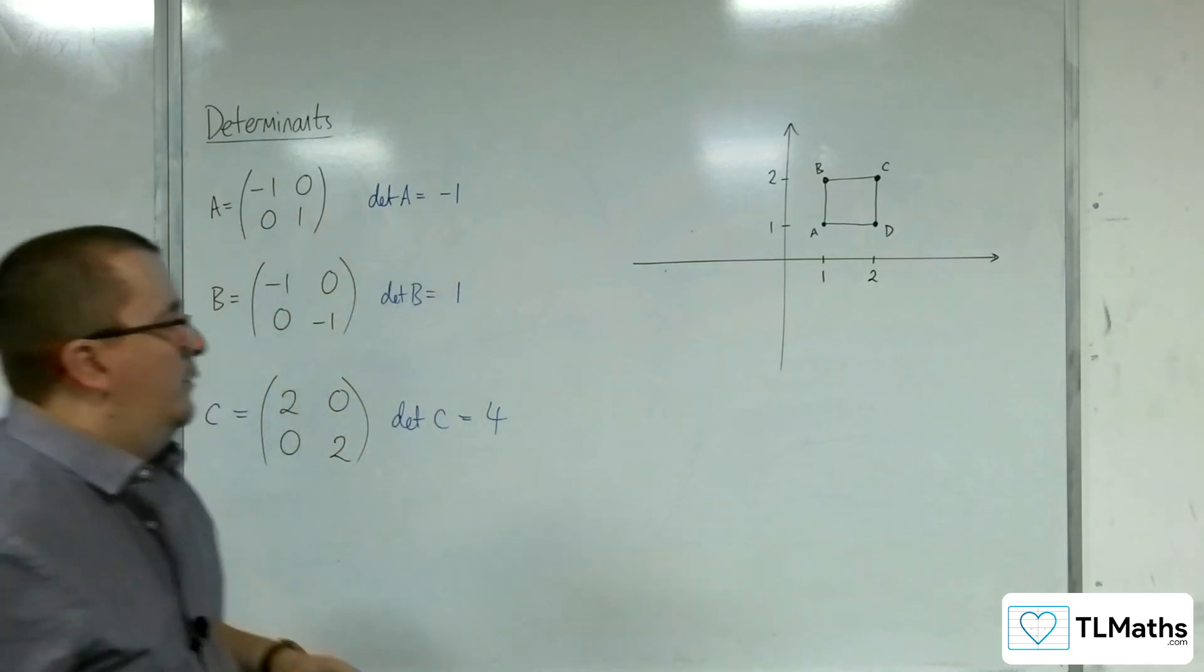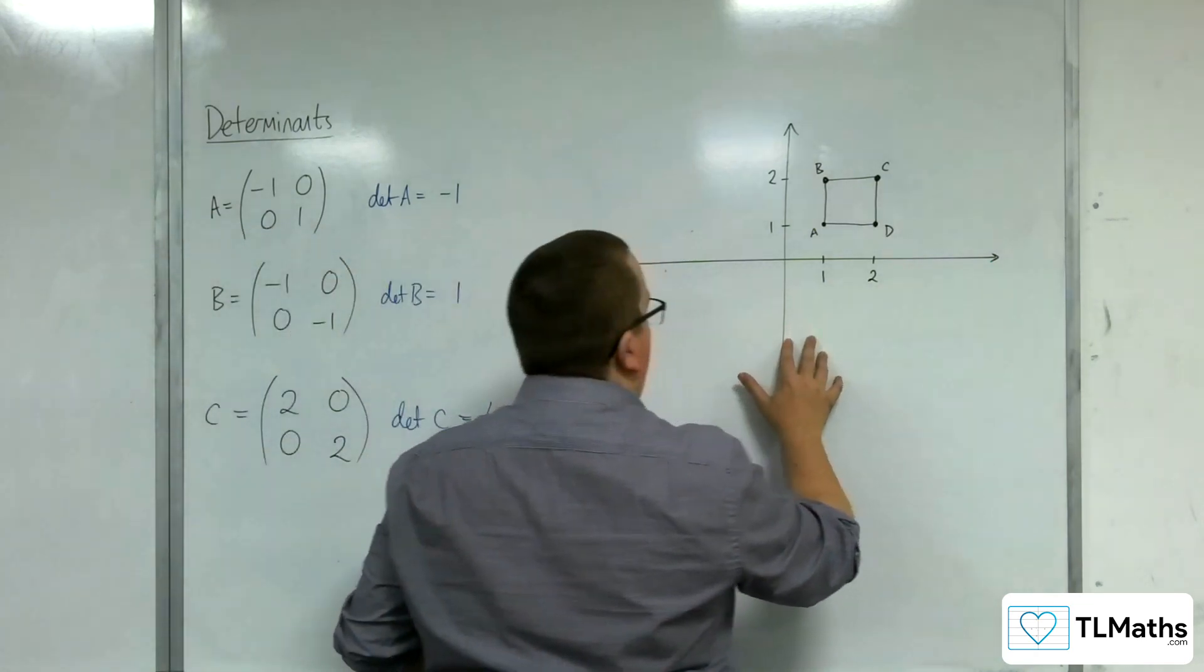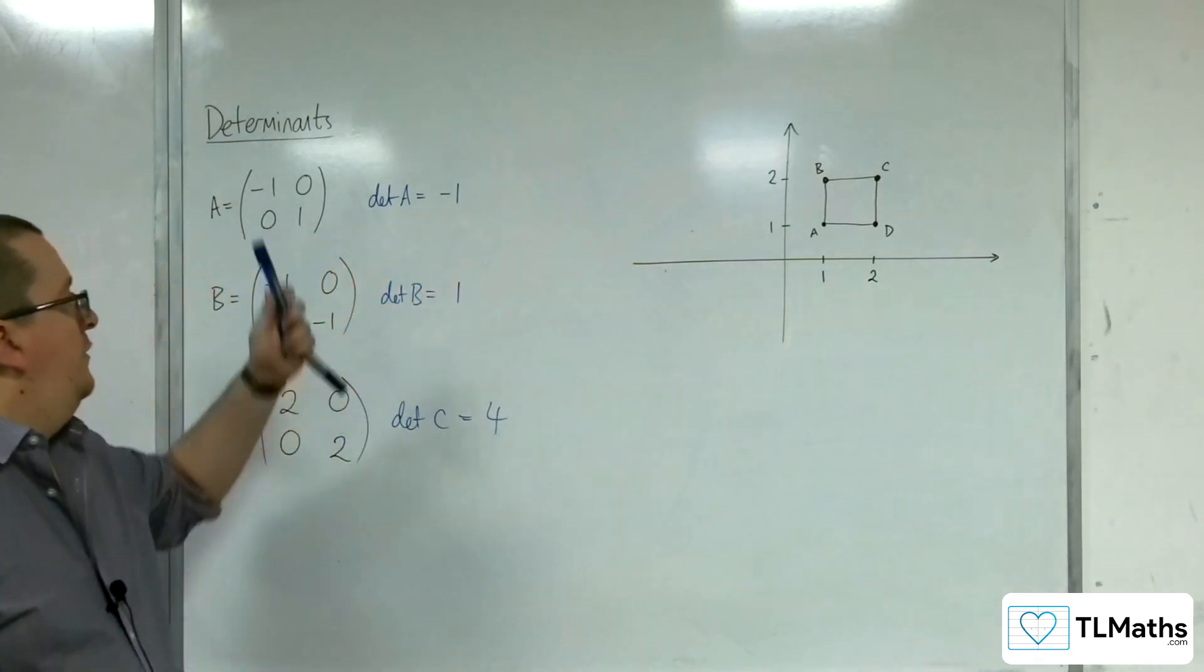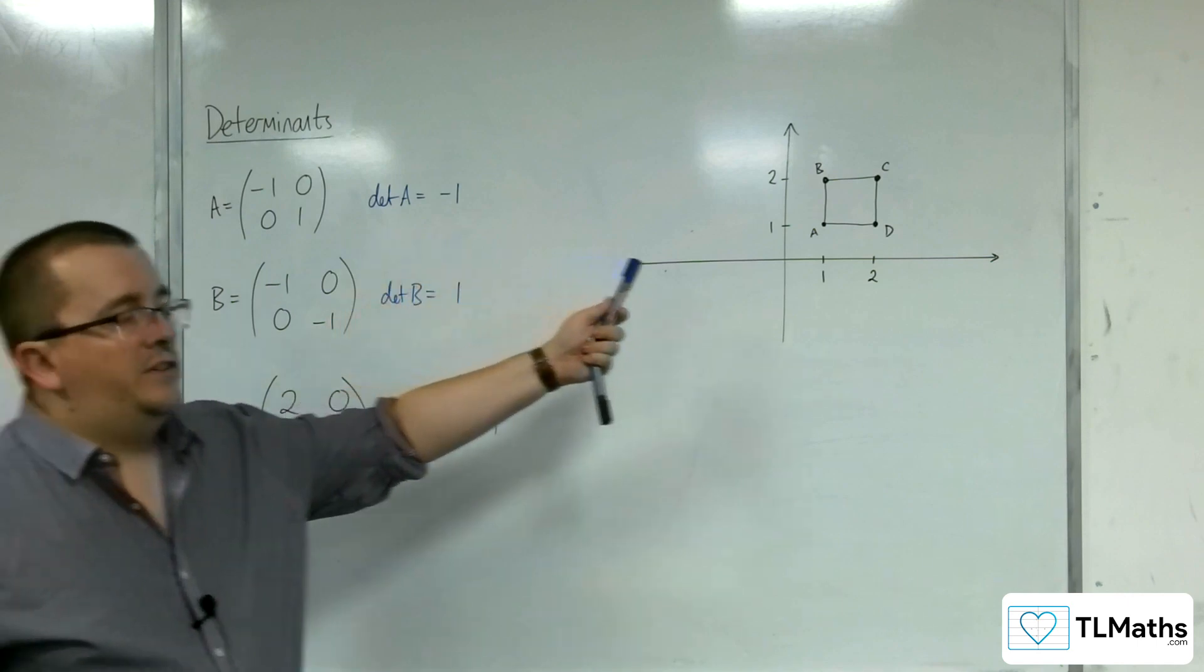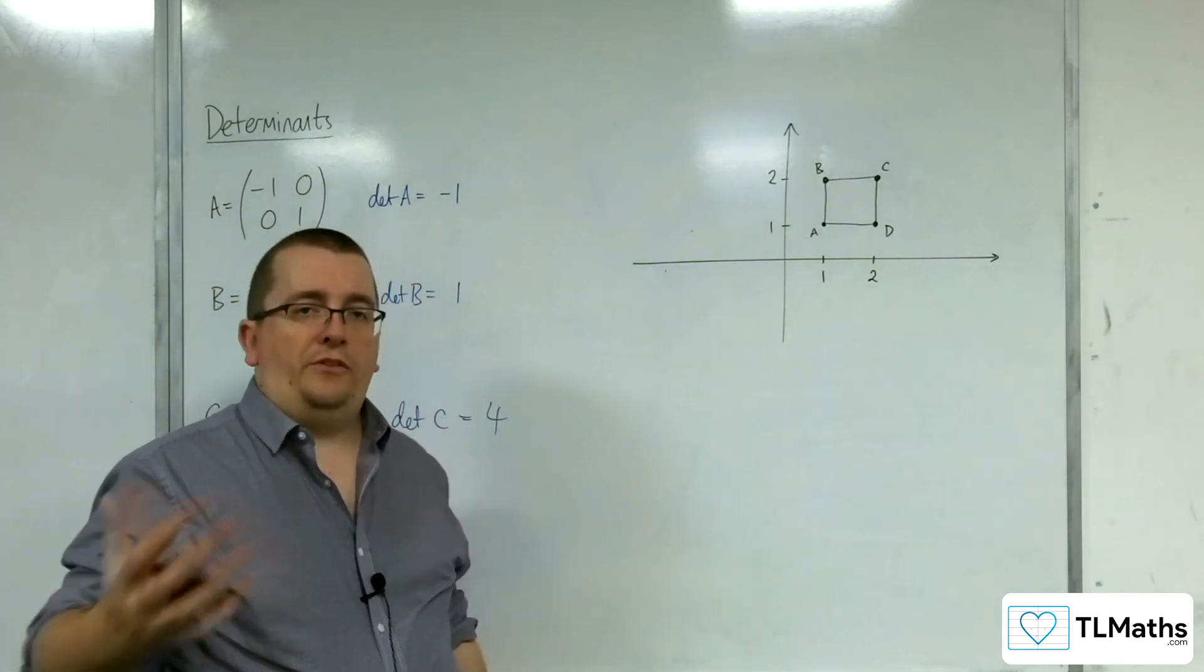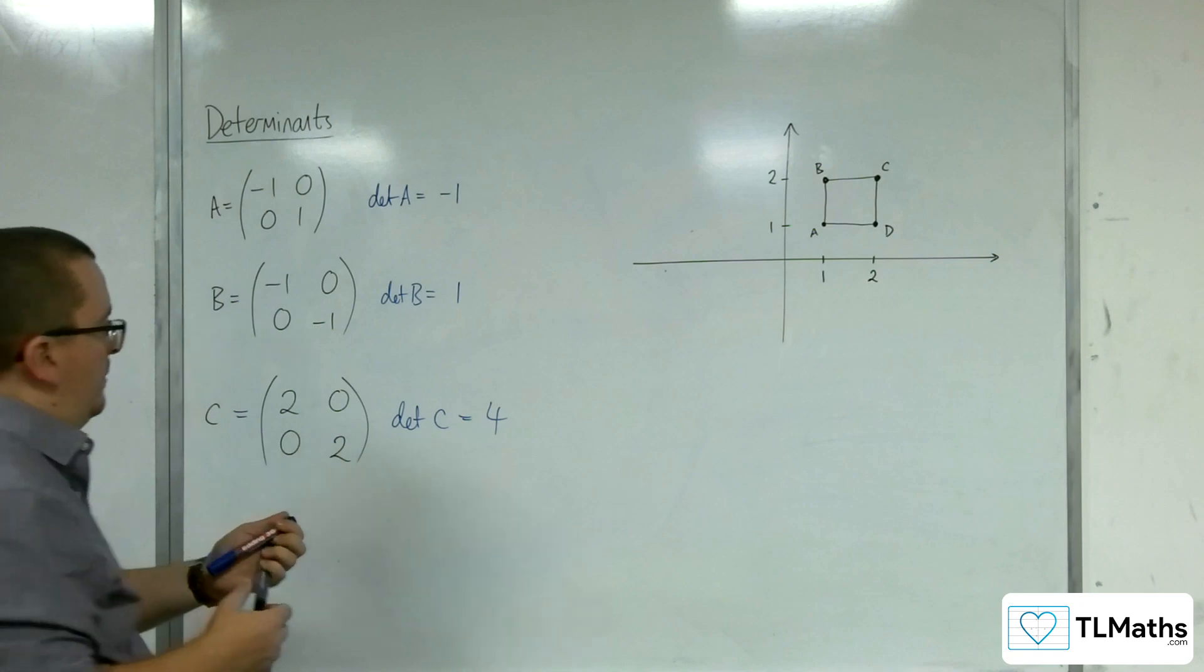So what we're going to now do is apply these matrices to the vertices of this square to see what happens and to see where they are mapped to.